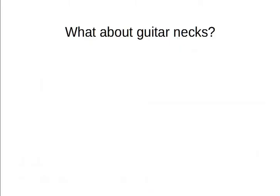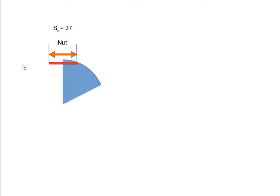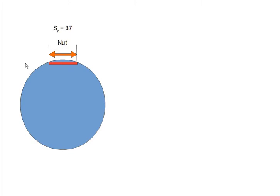When we move on to guitar, the reasoning is identical. The only thing that changes is that we do the calculation using the spacing between the outermost strings rather than the diameter. From now on, when I talk about string spacing, I mean the spacing between the outermost strings. Here's the nut of a guitar neck. The spacing between the outermost strings is 43mm. Here's the radius of the fingerboard at the nut — it's 304mm. If we divide the radius by the string spacing, we get a ratio of about 8.2.